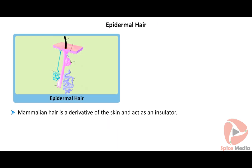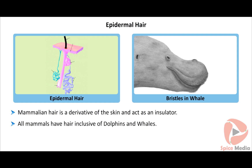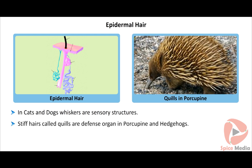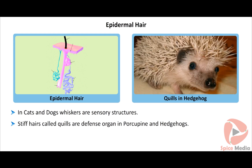Mammalian hair is a derivative of the skin and acts as an insulator against heat loss. All mammals have hair, inclusive of dolphins and whales, in the form of bristles on their snouts. The coloration and pattern matches with the background. In cats and dogs, whiskers are sensory structures.